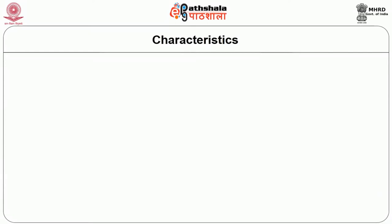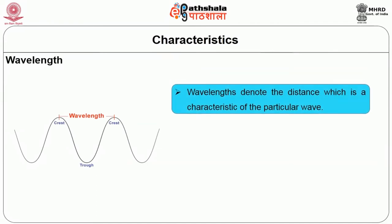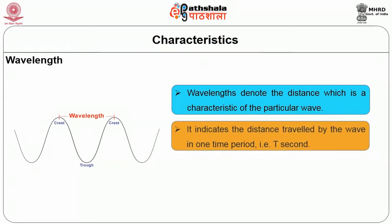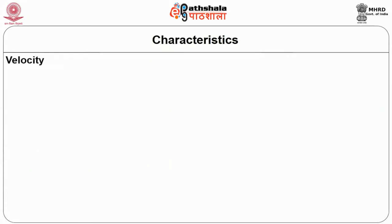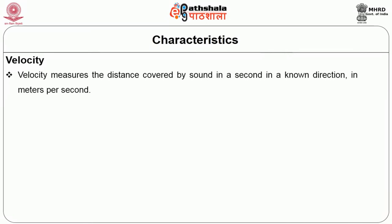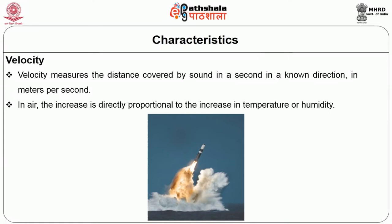The first characteristic is wavelength. Wavelength denotes the distance which is a characteristic of the particular wave. It indicates the distance travelled by the wave in one time period T seconds. The symbol is lambda, measured in units of meters. The second characteristic is velocity. Velocity measures the distance covered by sound in a second in a known direction, in meters per second. In air, the increase is directly proportional to the increase in temperature or humidity.